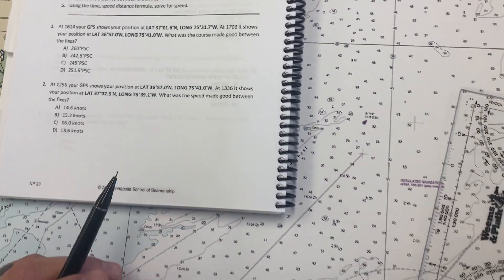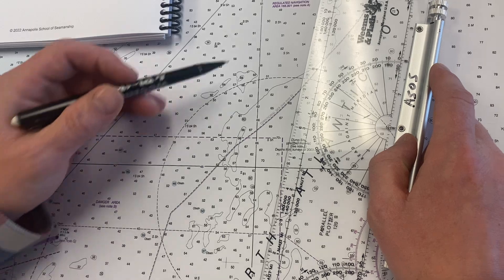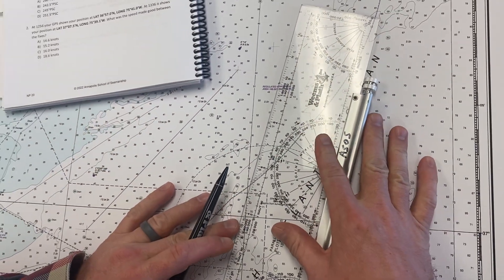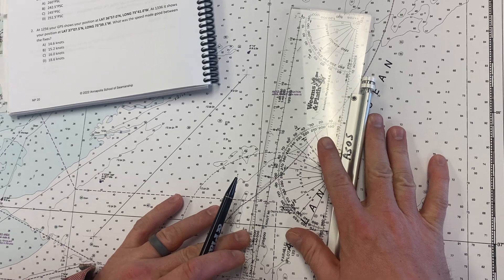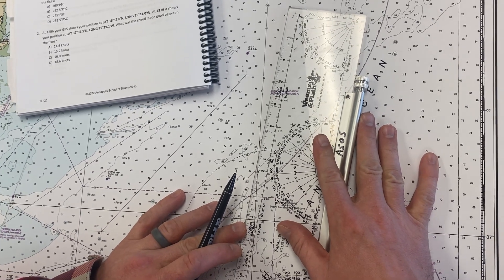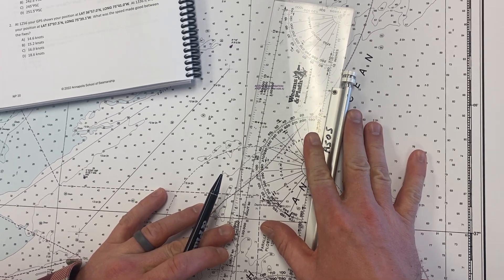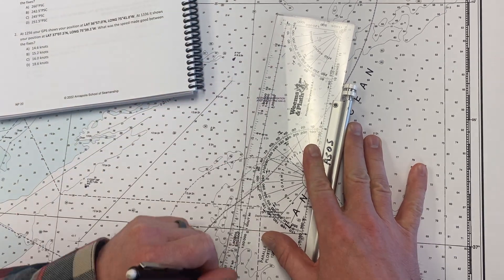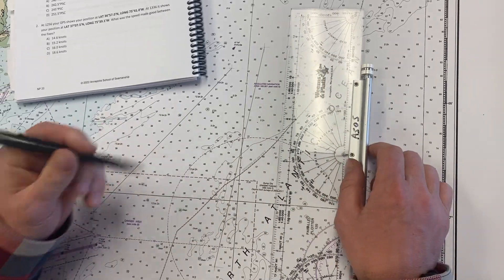I've gone ahead and plotted the first position here, second position here. What I'd like to do is first connect these two points. I'm going to draw a line here, run this line down between the two points.